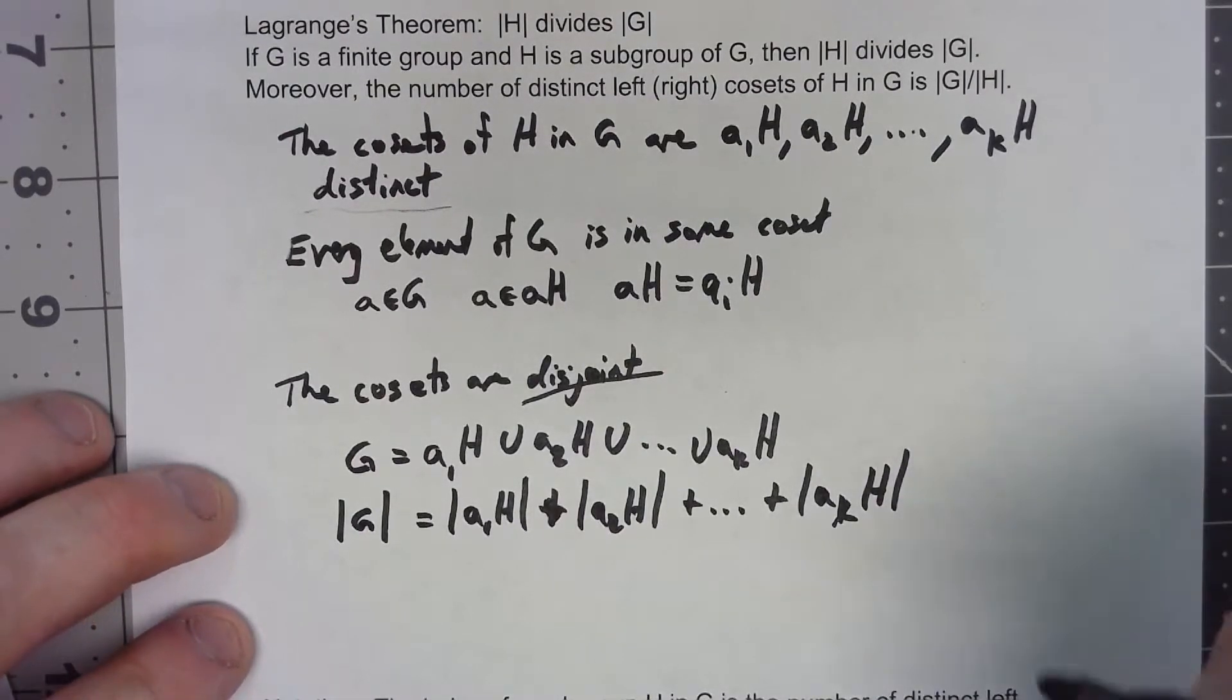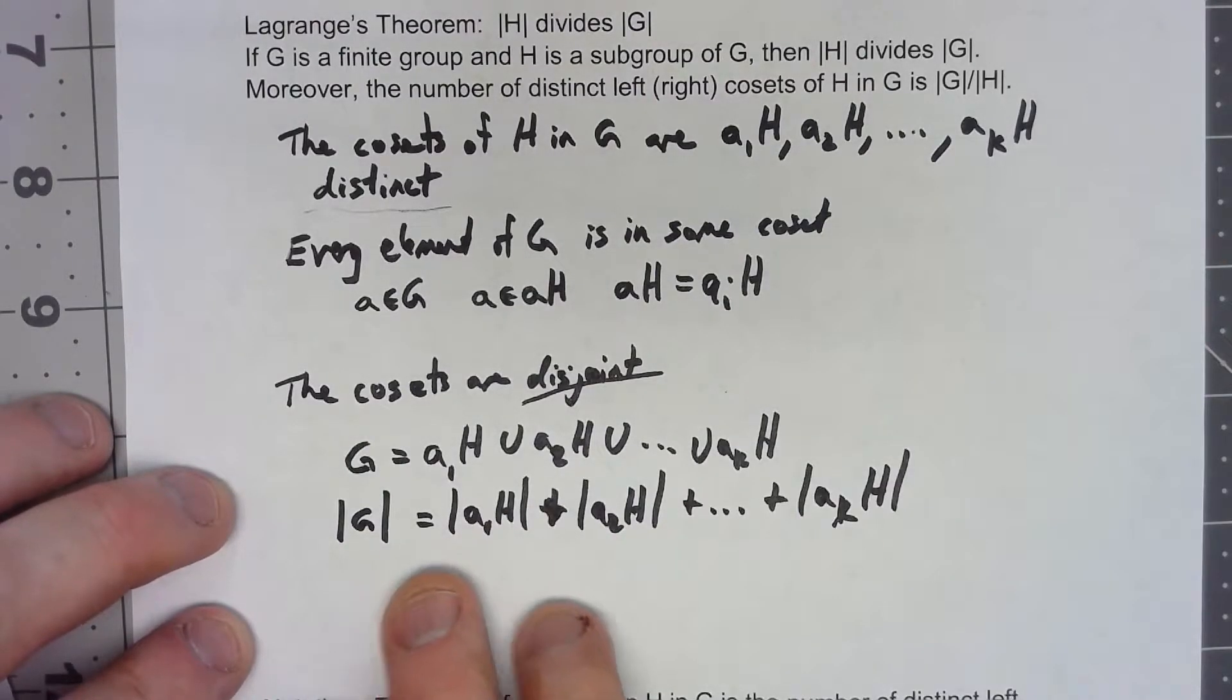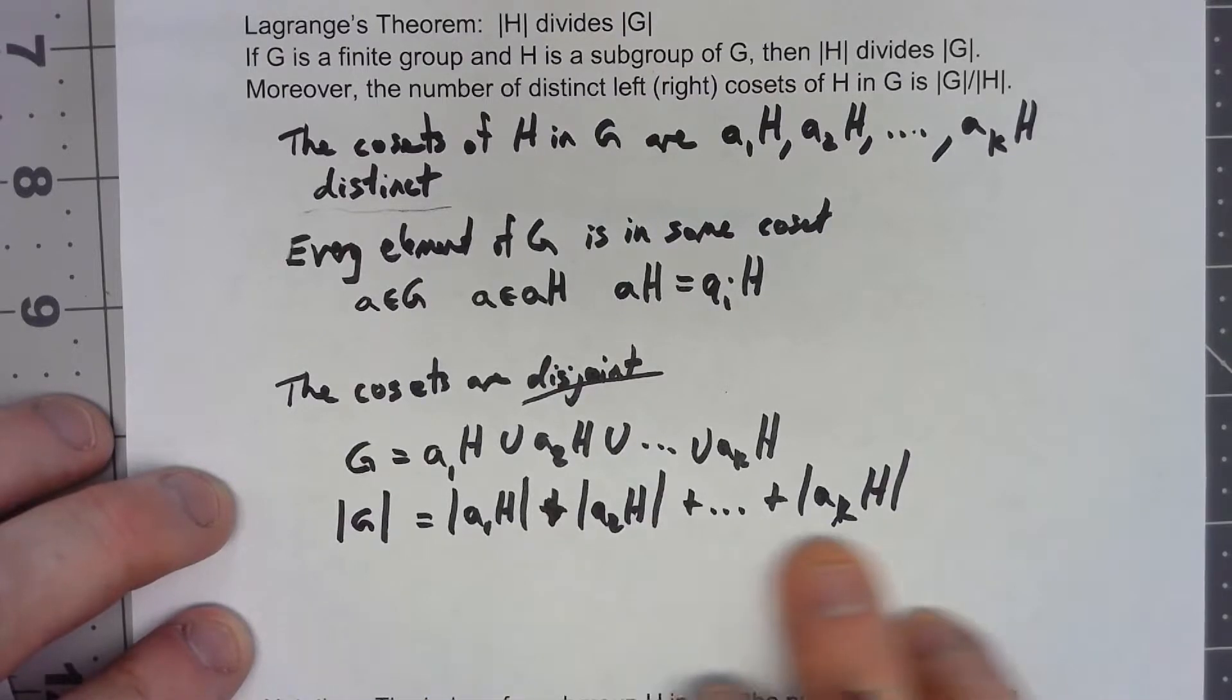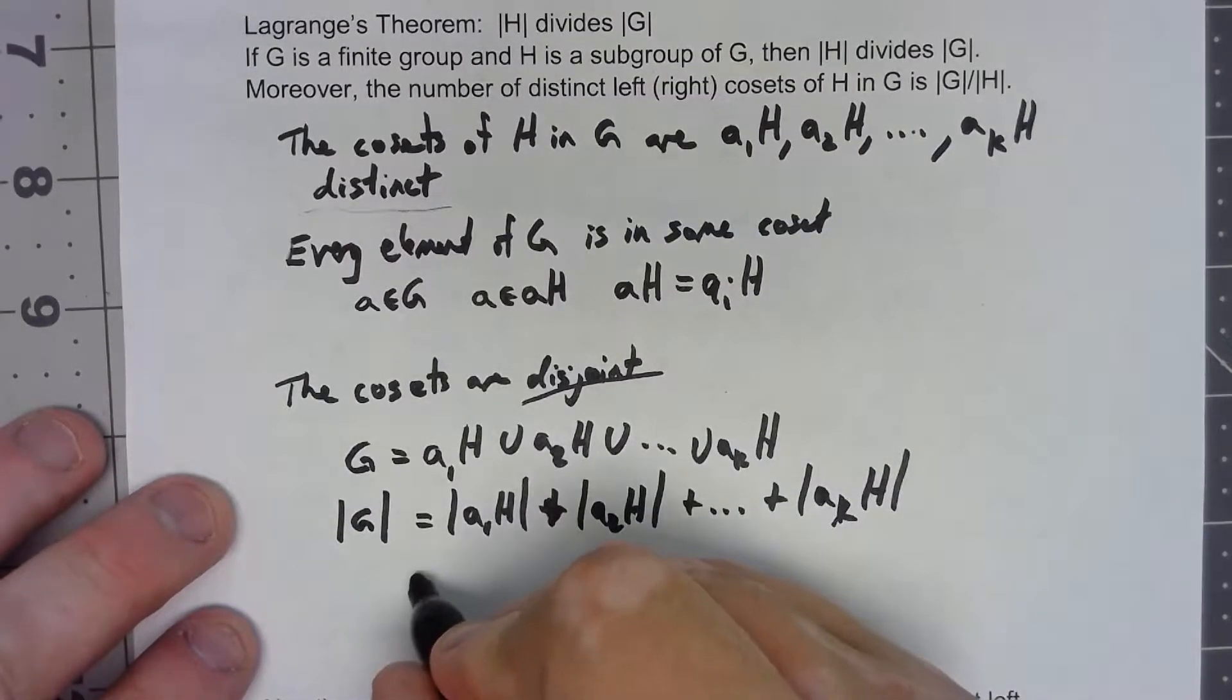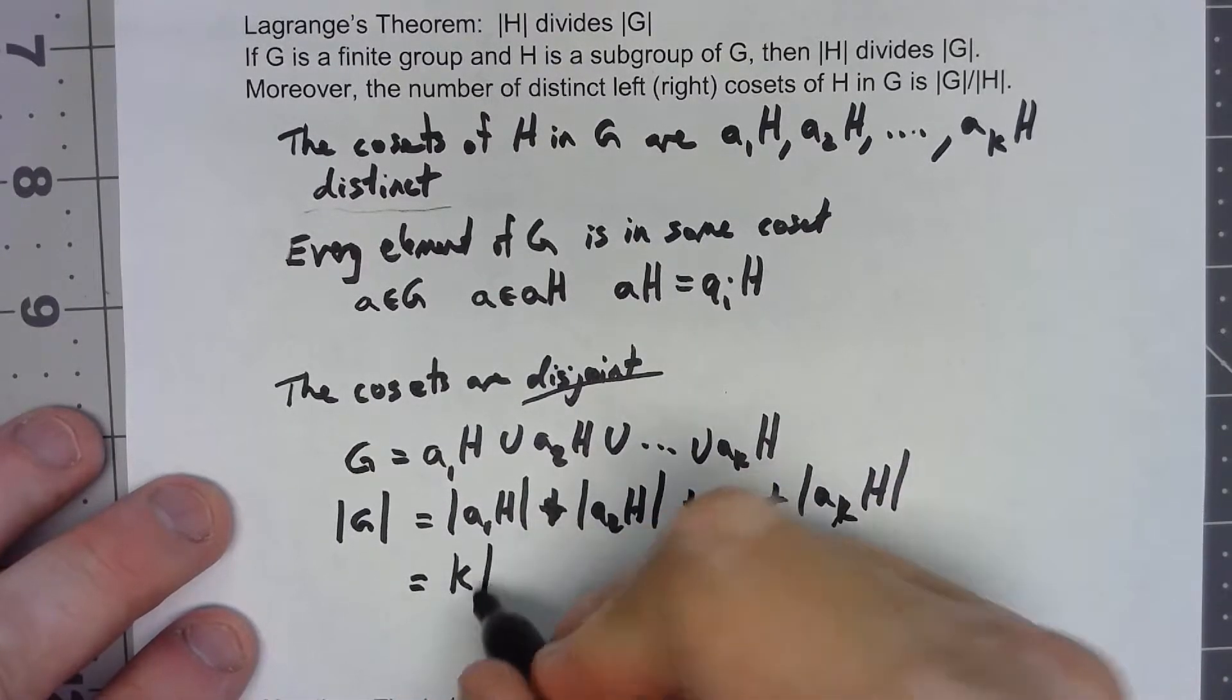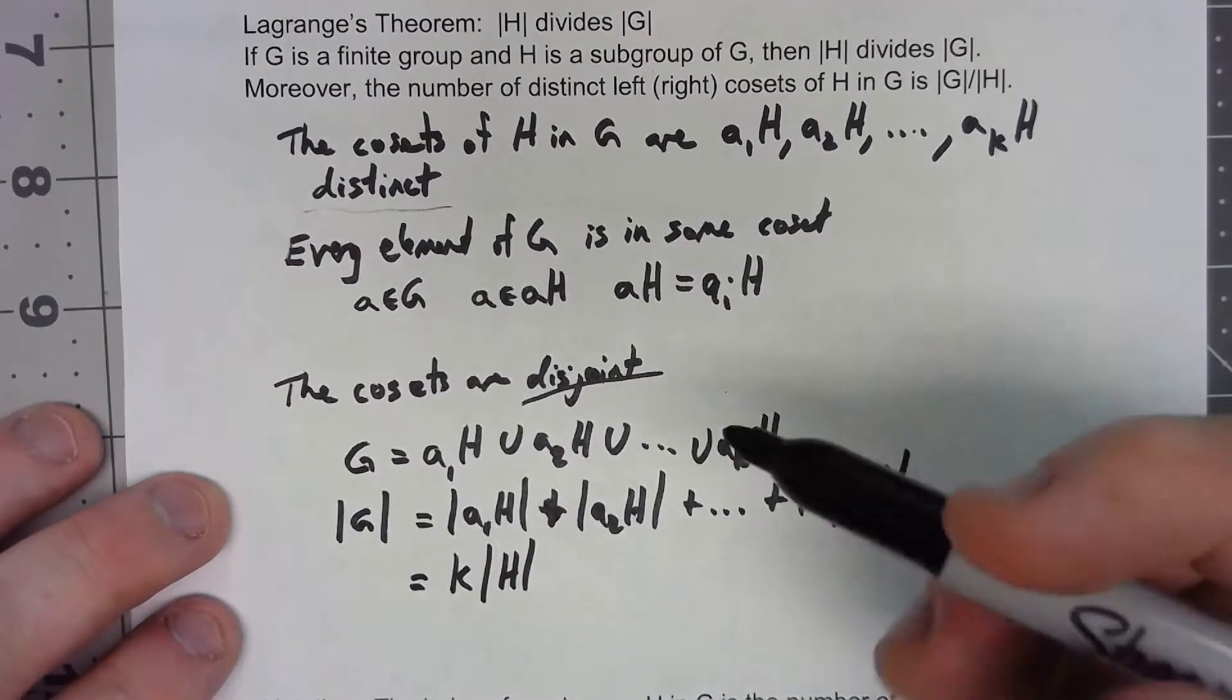But another one of those properties that I didn't go over very carefully in the video is that every one of these things has to have the same number of elements. So I can say this is equal to k times the order of H, and there we go.